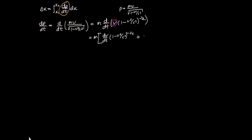Now leaving v constant and differentiating the second part: I bring the power down front, that's minus a half, then differentiate what's inside the bracket. Differentiating with respect to time, 1 is a constant so it gives 0. The derivative of this term is equal to minus 2v on c squared times dv/dt, and then I subtract 1 from the power, giving (1 minus v squared on c squared) to the minus 3 on 2.